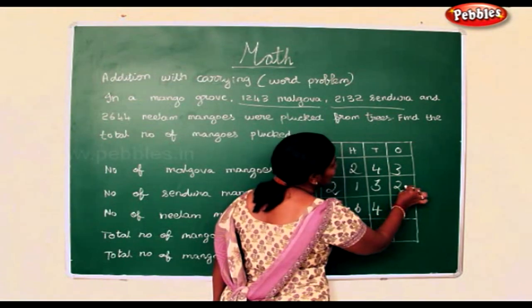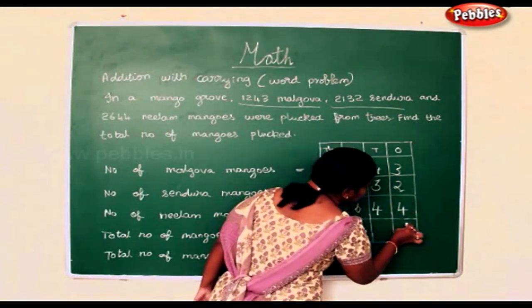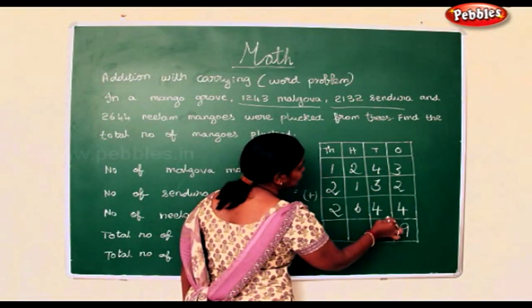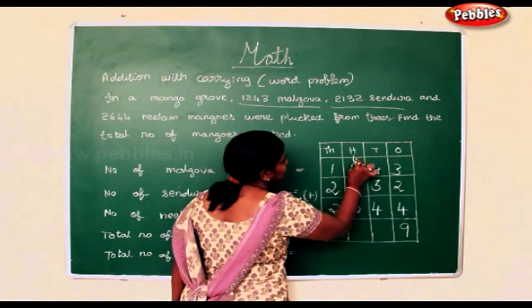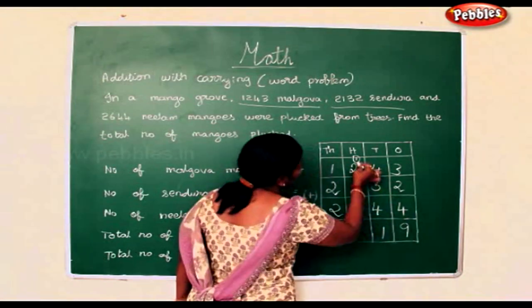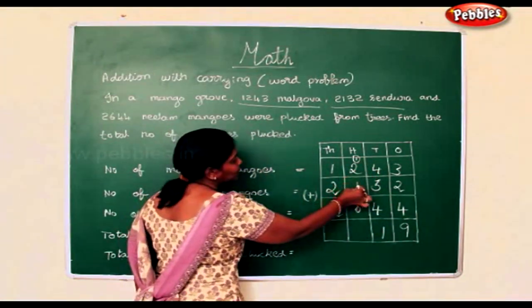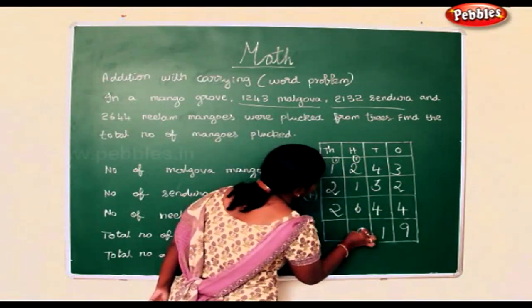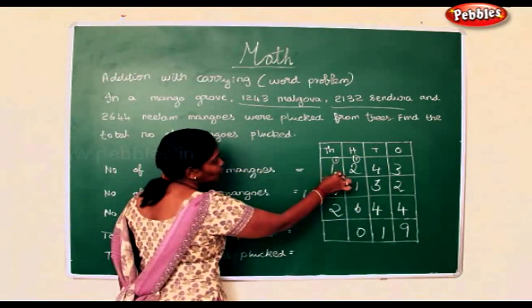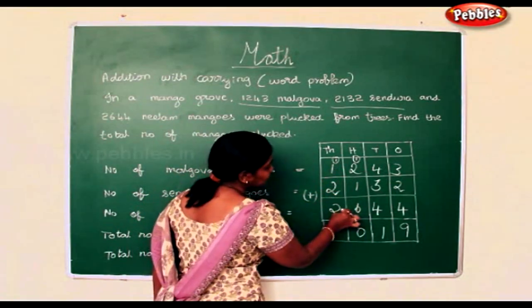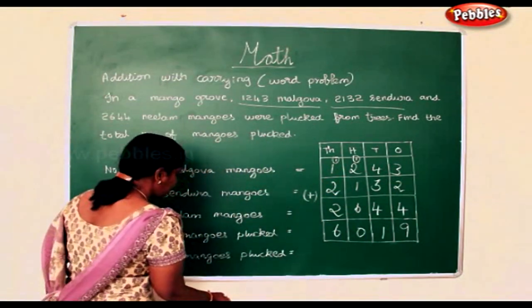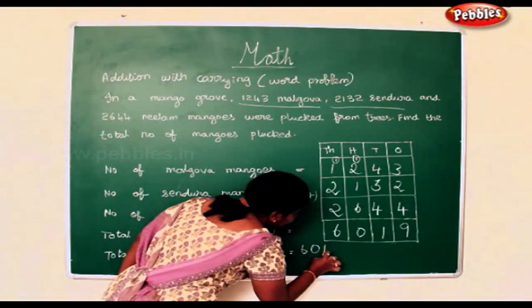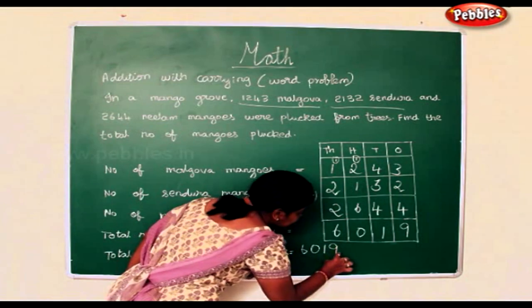3 add 2 is 5, 5 add 4 is 9. 4 add 3 is 7, 7 add 4 is 11. 1 add 1 add 2 is 3, 3 add 1 is 4, 4 add 6 is 10. 1 add 1 is 2, 2 add 2 is 4, 4 add 2 is 6. So the total number of mangoes plucked is 6,019.